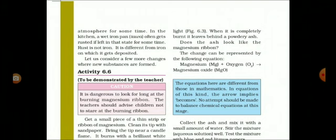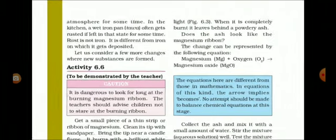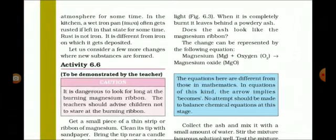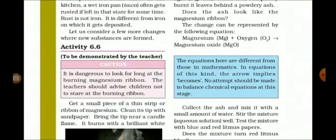In the kitchen, a wet iron pan, which is also known as tawa, often gets rusted if left in that state for some time. Rust is not iron. Always keep in mind that rust is not iron. It forms a covering on the iron objects, but it is not iron. It is different from iron on which it gets deposited. Now, let us consider a few more changes where new substances are formed.